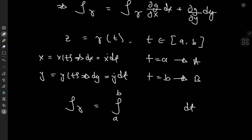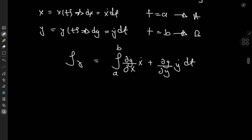So the integral over gamma is an integral with respect to t evaluated from t = a to t = b of (∂g/∂x)ẋ + (∂g/∂y)ẏ. Expanding those terms, we have the integral from a to b of (∂g/∂x)(dx/dt) + (∂g/∂y)(dy/dt).